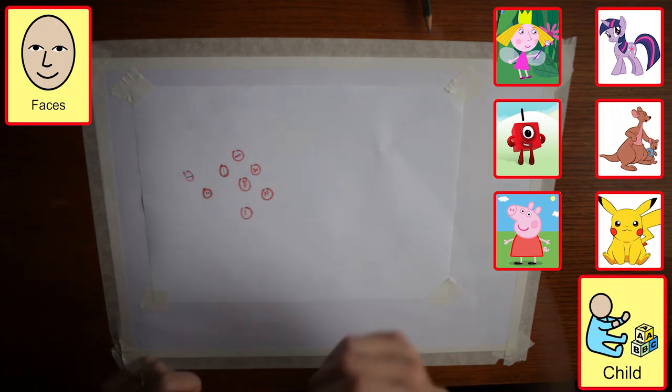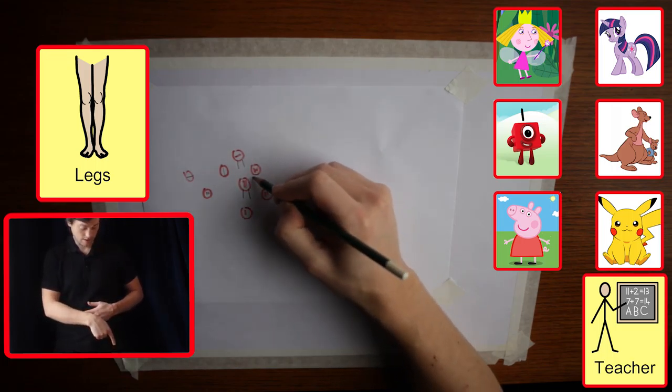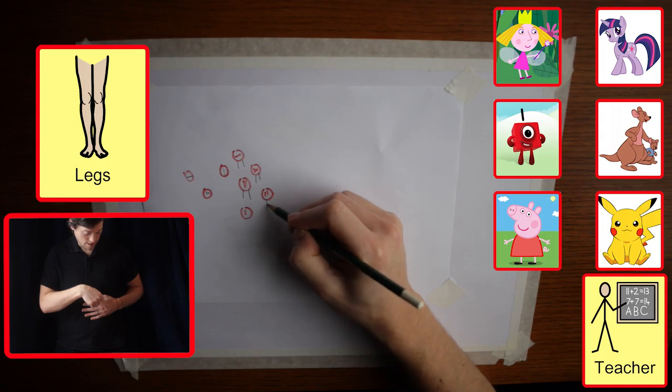As this is practiced and becomes familiar, we add external lines to represent arms and legs, urging the student to copy.